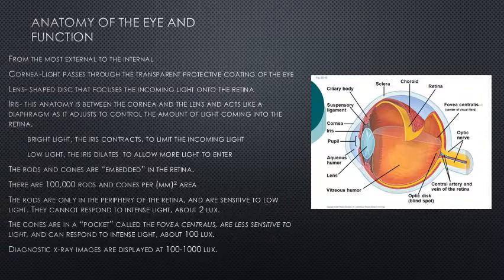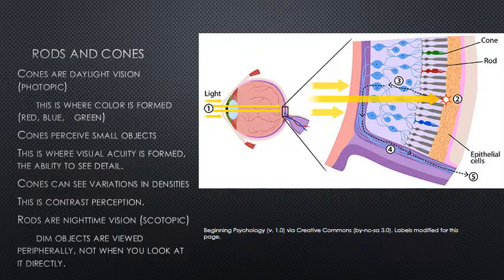The cones are in the pocket of the fovea centralis and are less sensitive to low light — they can respond to more intense light, about 100 lux. Light moves through the lens to the back of the eye, which is the retina. The light hits the discs that are part of the rods and cones, and the small amount of light photons activate those cells.